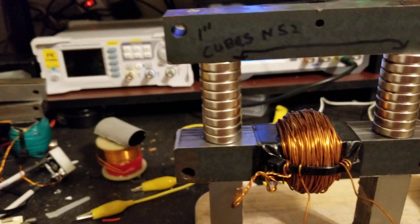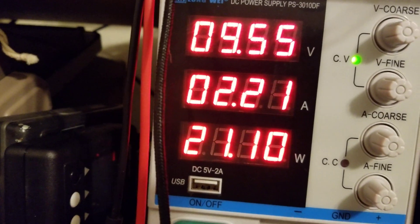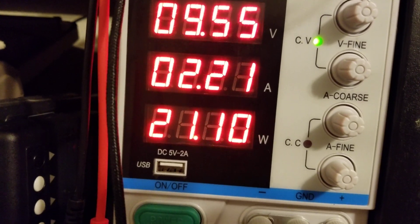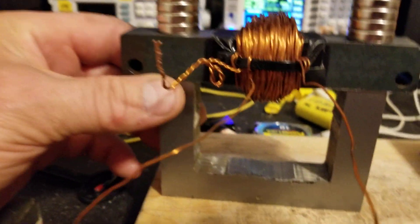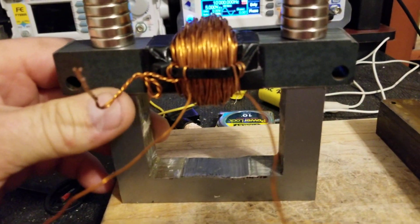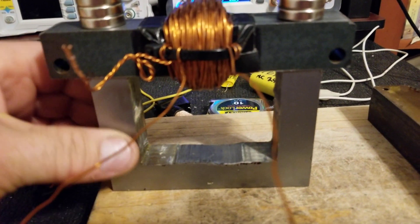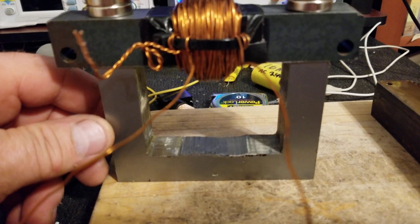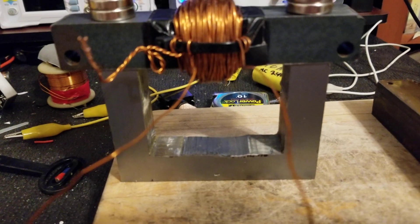This coil here on this particular core is drawing 2.21 amps, well, 21 watts. That's another indication of saturation and gives you an idea what's being absorbed.